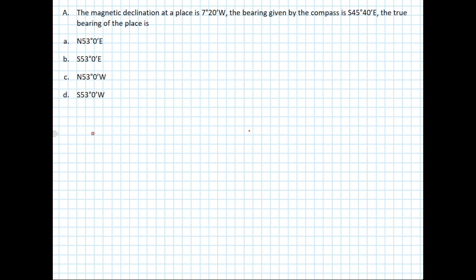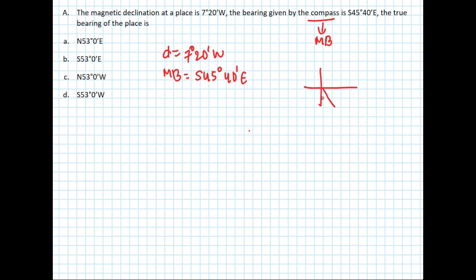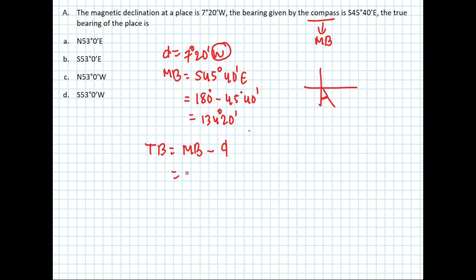Next question: the magnetic declination at a place is 7 degrees 20 minutes west, and the bearing given by the compass is south 45 degrees 40 minutes east. Find the true bearing. Declination is 7 degrees 20 minutes west and the magnetic bearing is south 45 degrees 40 minutes east. To convert to whole circle bearing, we subtract from 180 degrees: 180 minus 45 degrees 40 minutes gives 134 degrees 20 minutes. True bearing equals 134 degrees 20 minutes minus 7 degrees 20 minutes, which gives 127 degrees.